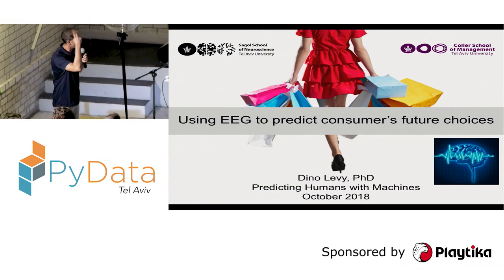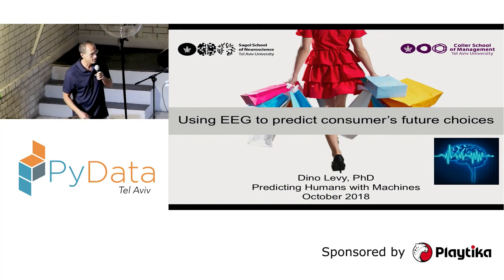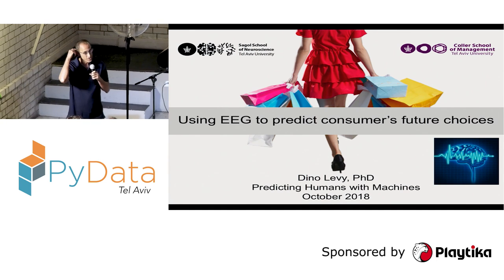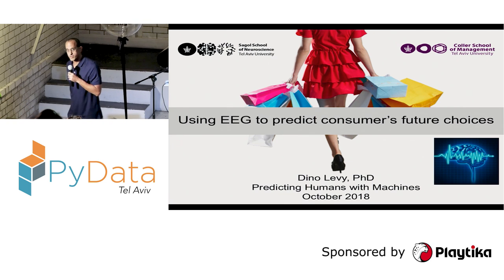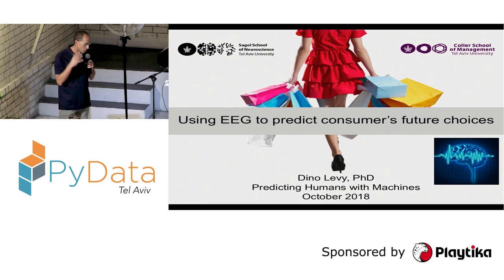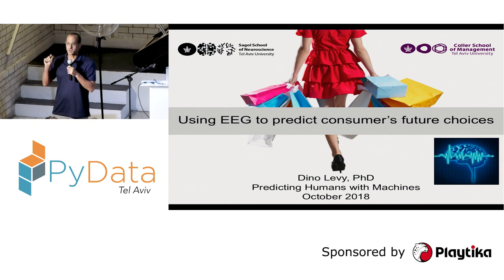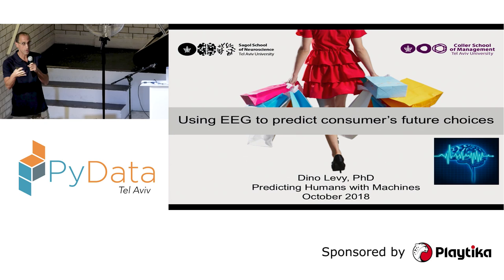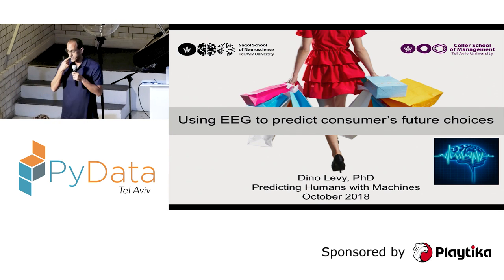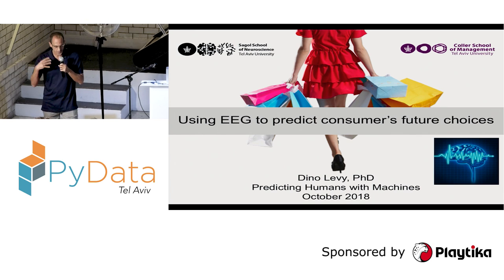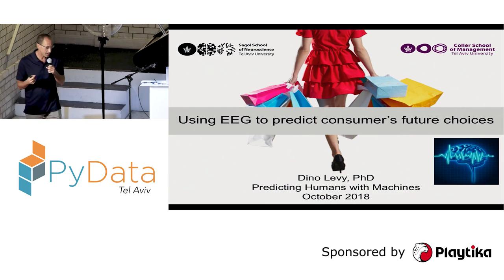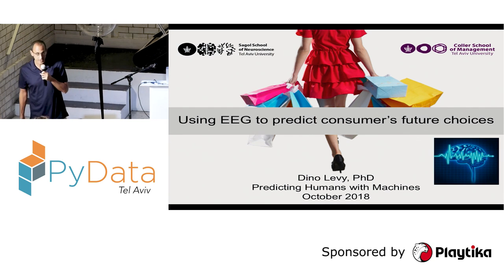Good evening everyone. Thanks for your invitation, Hanan. The previous talks were great. I'm at Tel Aviv University. My training is mainly neuroscience, a bit of economics. The fields of my study are neuroeconomics and consumer neuroscience. I was asked today to talk about mainly one branch of my studies in the lab, which is using EEG data or neural data in order to try to predict what you will choose in the future, what your preferences are, whether you like some product or not.